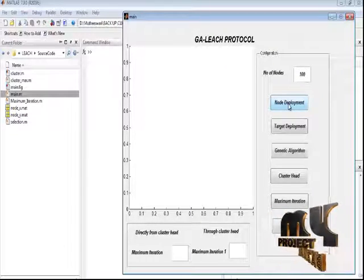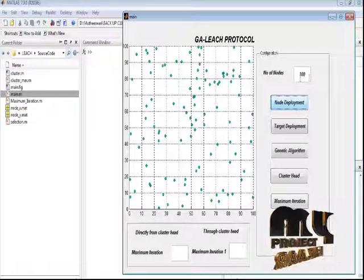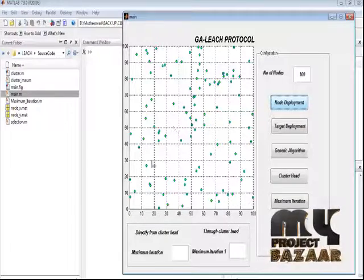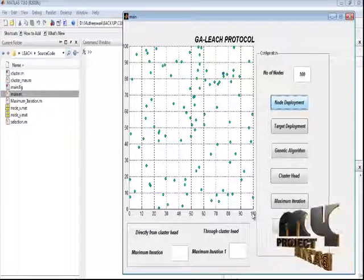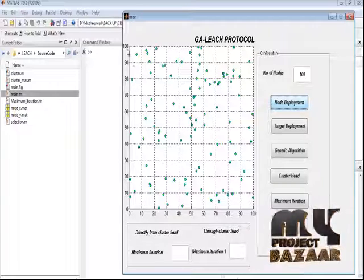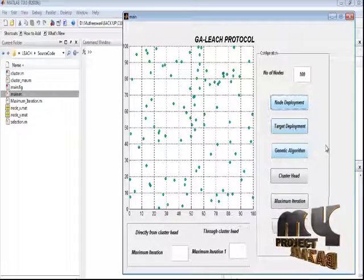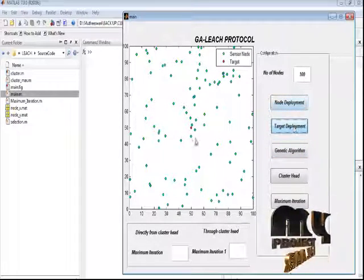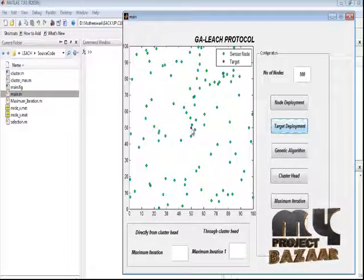By pressing the node deployment, we deploy the 100 nodes in the area specified, that is, width and height of the coverage area will be 100. And by pressing the target deployment, we deploy the target at the center position.